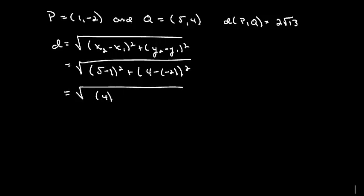So this is 4 squared plus 6 squared which is 16 plus 36 which is 52. So that ends up being 2 square root of 13.